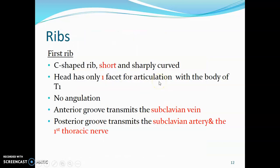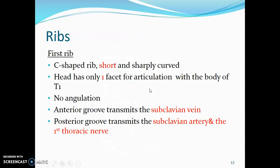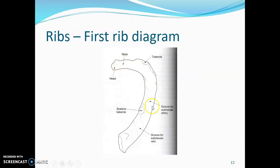The first rib is an atypical rib. It is C-shaped, short, and sharply curved. The head has only one facet, which articulates with the body of the first thoracic vertebra. There is no angulation of the first rib. It has two grooves on its superior surface: the anterior groove transmits the subclavian vein, while the posterior groove transmits the subclavian artery and the first thoracic nerve. It also has a scalene tubercle for the scalenus anterior muscle.